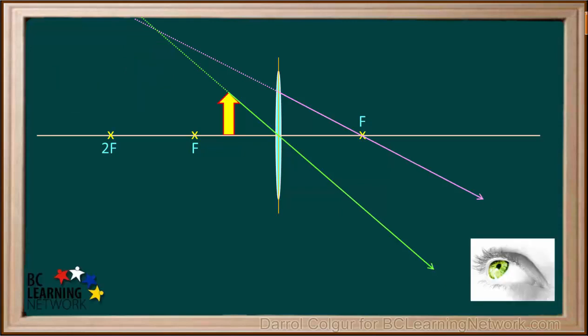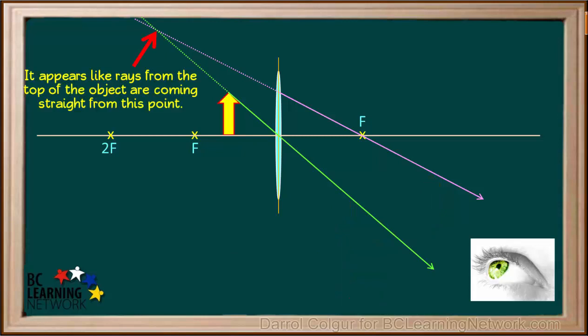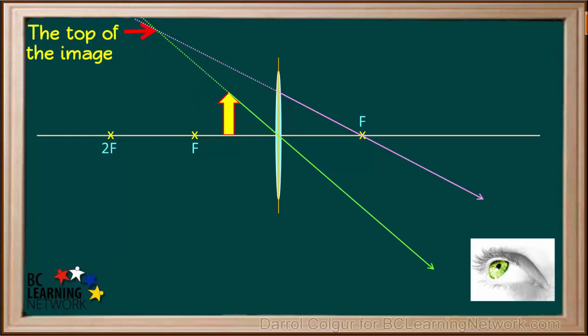Now let's pretend we're looking through the lens from the right side. When we see light rays, our brain assumes that they are traveling in straight lines from an object. So it appears like these two rays from the top of the object are coming straight from the point where the two dotted lines cross.